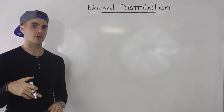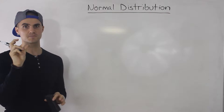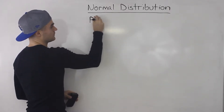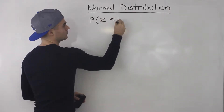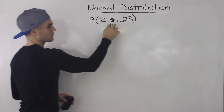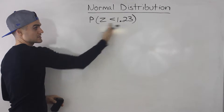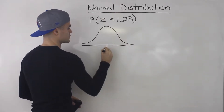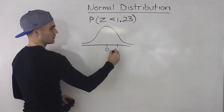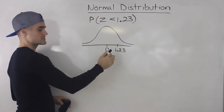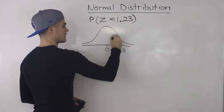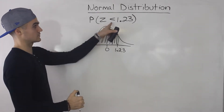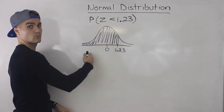In this specific video I'm going to talk about how to find the area for a specific z-score, whether that's to the left of the z-score or to the right of it. We ended the last video asking: how do we find the specific probability for a z-score of 1.23 to the left of 1.23? That's the probability that z is less than 1.23.